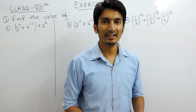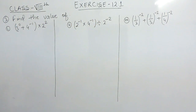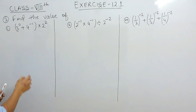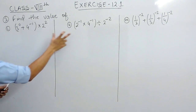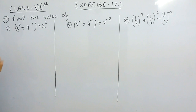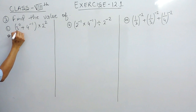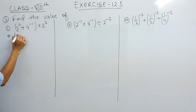Hello everyone. In this video we are going to solve question number 3 of Exercise 12.1. The first three parts require us to find the value of each expression. For the first part, we know that something raised to the power 0 is 1.